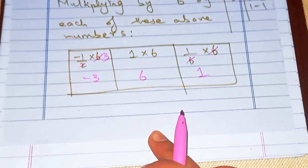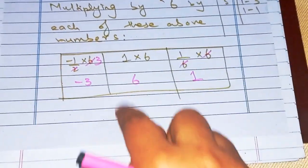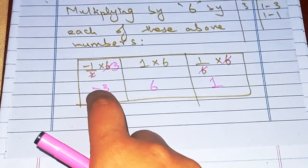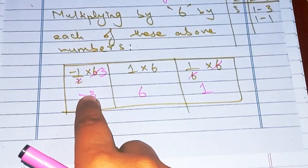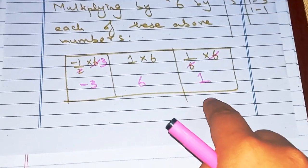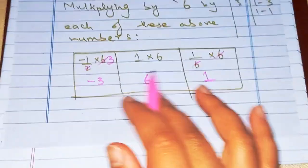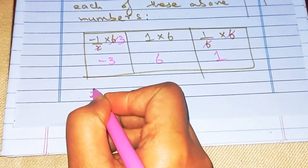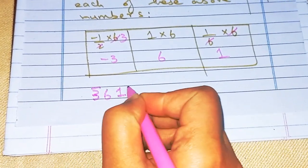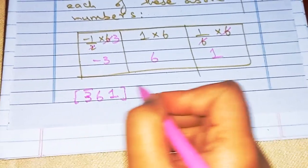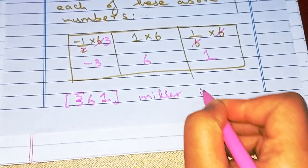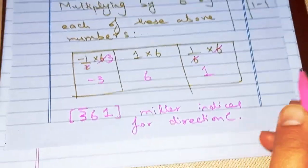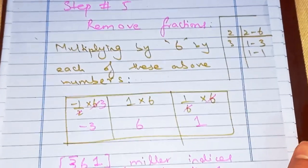These values cannot be reduced further — there is no single integer that can completely divide all three of them. For example, dividing by 3 would introduce a fraction in one of the values. Therefore, the final Miller indices for direction C are [3̄ 6 1], written in square brackets with a bar over the 3 to denote the negative value.